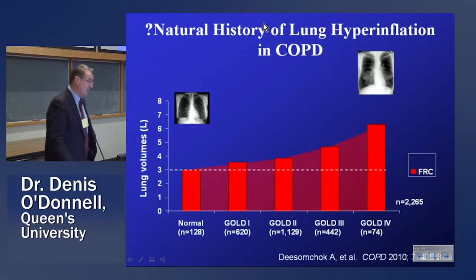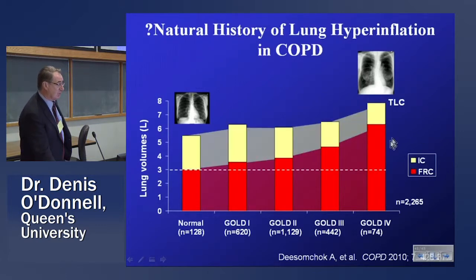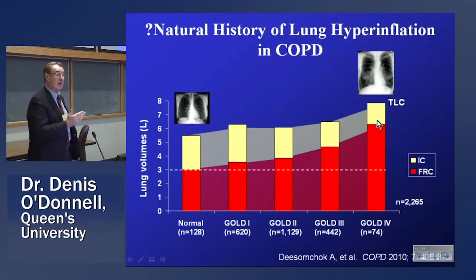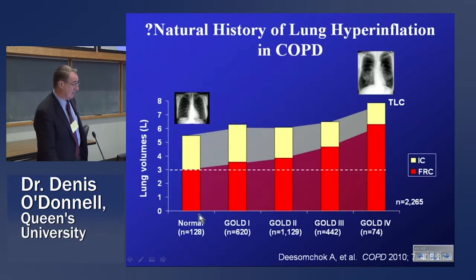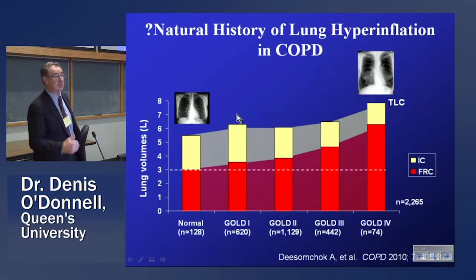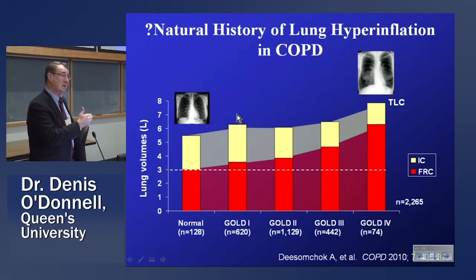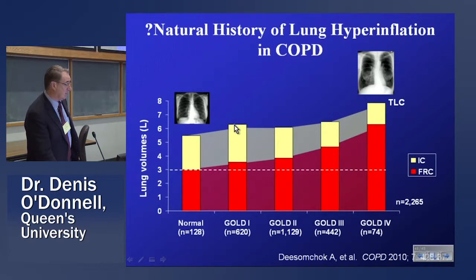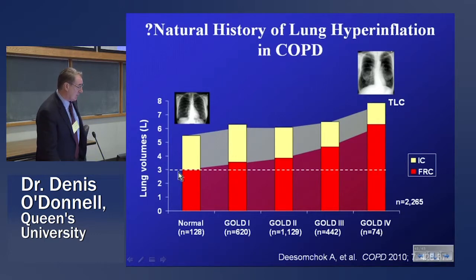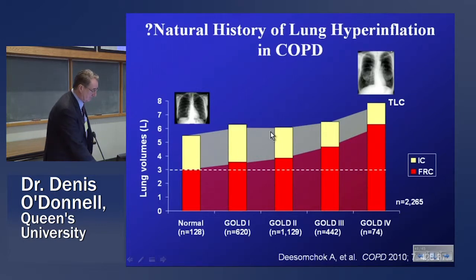Lung hyperinflation is another question we've sort of avoided. We certainly know what happens in advanced disease and the consequences of resting hyperinflation, but we have no idea of the natural history of hyperinflation — these are cross-sectional data. We've made the observation that in people with GOLD 1, TLC and FRC increase together, preserving the inspiratory capacity. Peter Macklin observed that in patients with early disease, they seem to preserve vital capacity through adjustments in chest wall mechanics, which allowed them to accommodate the increasing air trapping. We need to know its longitudinal progress.